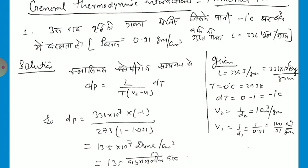So we have seen that dP is equal to L divided by T, multiplied by V2 minus V1, multiplied by dT. L is given in grams and joules, so we have to convert this into the proper unit. L is equal to 336 joule per gram.